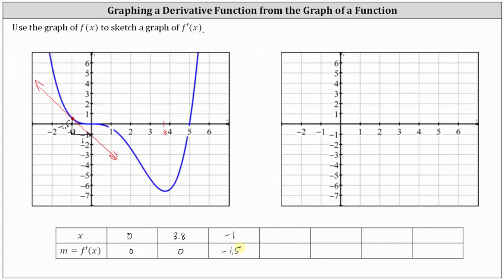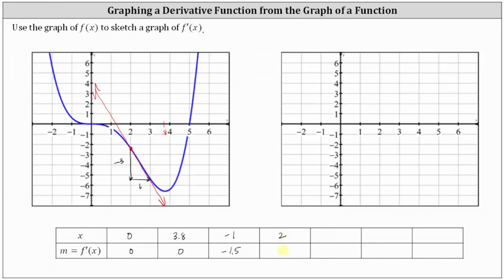Now let's find the slope of the tangent line at x equals two, which would be this point here. Let's go ahead and sketch the tangent line. From the point of tangency, it looks like if we go down 1, 2, 3 units and right one unit, we find another point on the tangent line. The vertical change is negative 3 and the horizontal change is positive 1, so the slope of the tangent line is negative 3 at x equals 2, which means the derivative function value is negative 3.